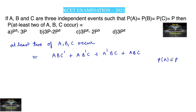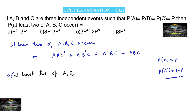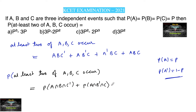Since the complement of an event with probability P has probability 1−P, the probability of at least 2 of A, B, C occurring equals P(A ∩ B ∩ C') + P(A ∩ B' ∩ C) + P(A' ∩ B ∩ C) + P(A ∩ B ∩ C).